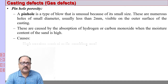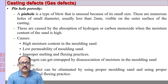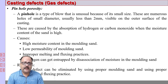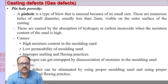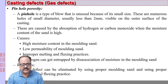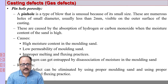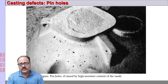Another defect is pinhole porosity. This is caused by hydrogen, which can evolve in the casting. Hydrogen may be present in the molten metal itself, or it can evolve from moisture in the sand. Being light, hydrogen tries to escape the casting during solidification and leaves very thin, small, long holes — as if made with a pin. Such defects are called pinhole porosity. Causes include high moisture content and faulty or improper melting and fluxing practices. Good fluxing and melting practices can eliminate this defect.